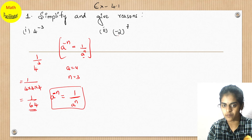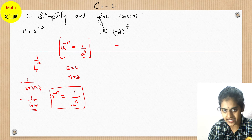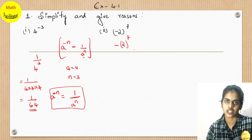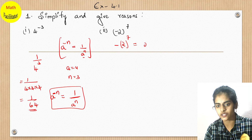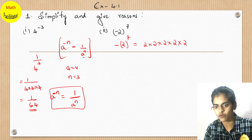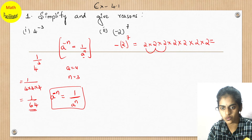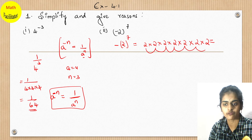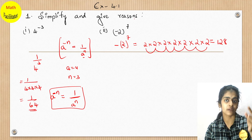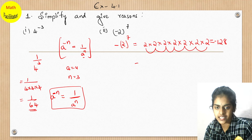Now let us see the next one: minus 2 whole power 7. This is nothing but minus 2 power 7. That is 2 power 7, which is 2 multiplied 7 times: 2, 4, 8, 16, 32, 64, 128. But remember, here you have minus 2 whole power 7, so you will have a minus. The answer is minus 128.